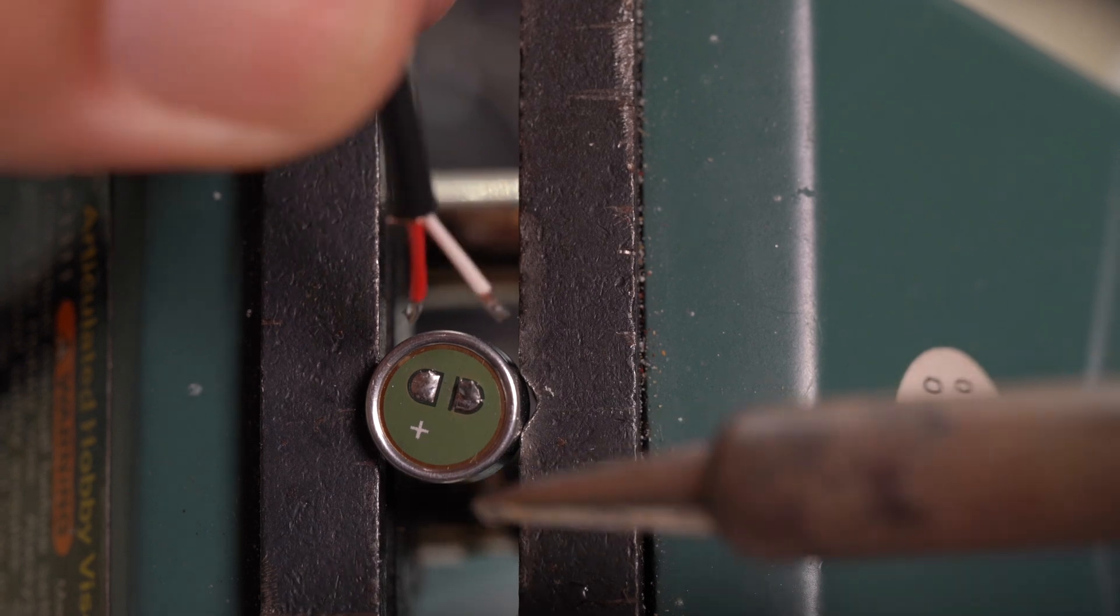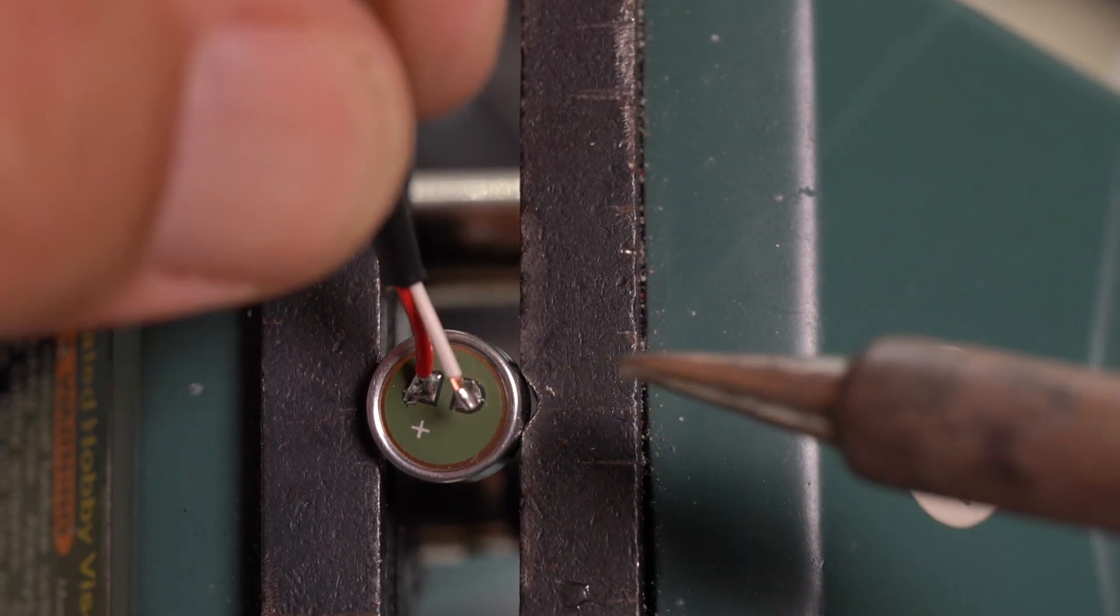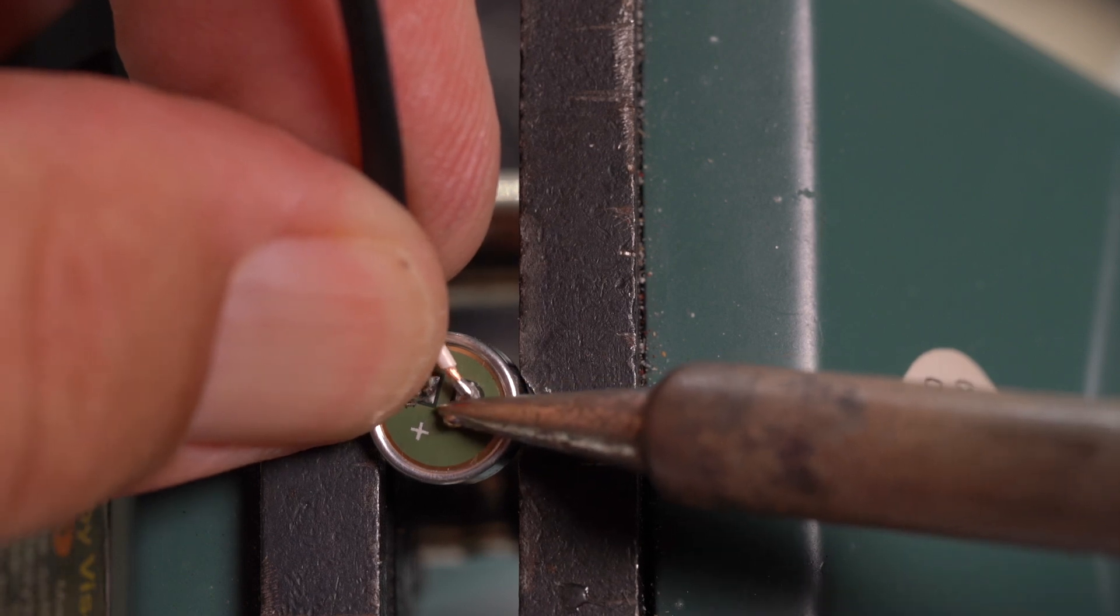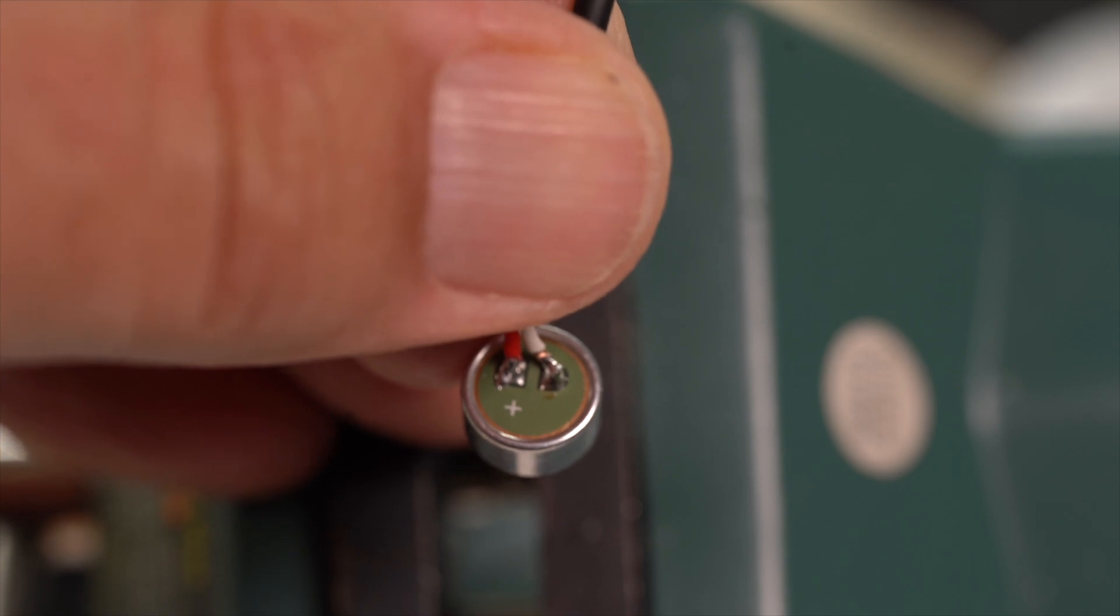With the capsule held gently in either a small vise or one of those alligator clip third-hand things, solder the red to plus and the white to the other connection point. Later we will seal it with adhesive, but only after we test it.